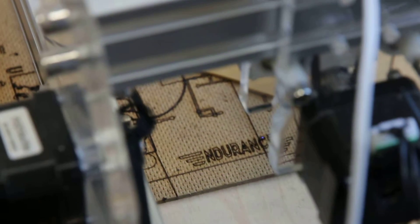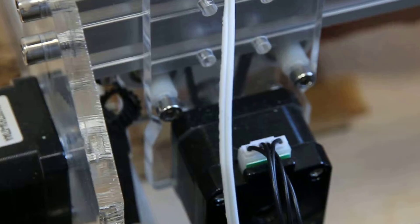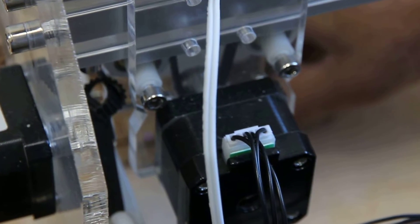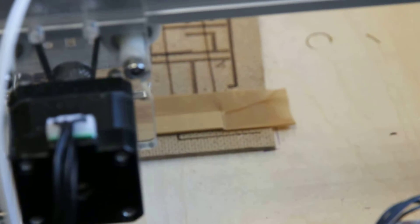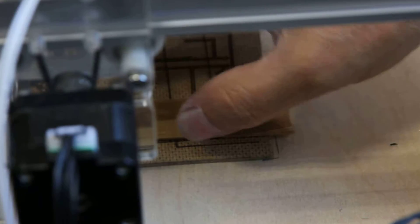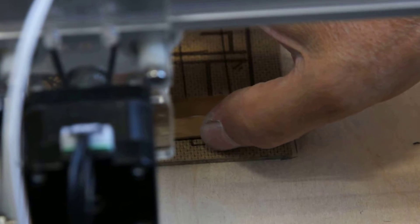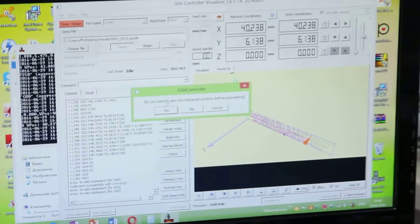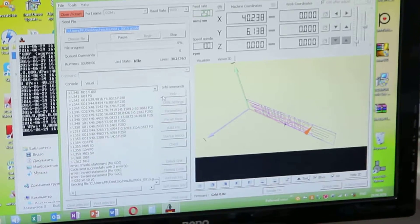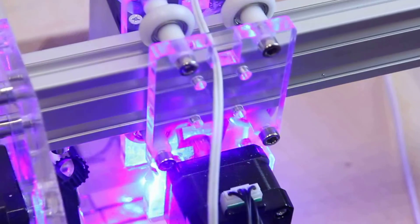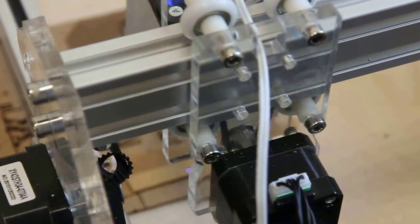Now we put it on the Endurance DIY engraving machine and we set up the zero point. You see that it has to be placed accurately and we are ready to start the GRBL program. So we start the program and the laser starts working.